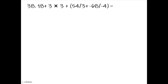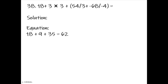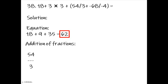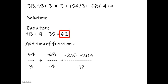18 plus 3 multiplied by 3, added by the sum of 54 over 3 plus negative 68 over negative 4 equals. Solution. Equation: 18 plus 9 plus 35 equals 62. For 54/3 plus (-68)/(-4): find a common denominator for 3 and -4, which is -12. Negative 12 divided by 3 is -4, times 54 is -216. Negative 12 divided by -4 is 3, times -68 is -204. This becomes -420 over -12, which equals 35.